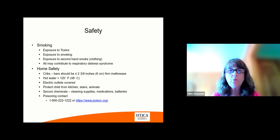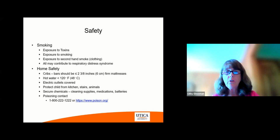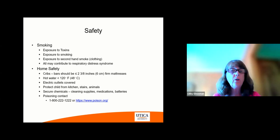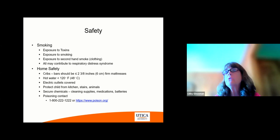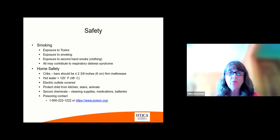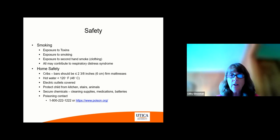Home safety areas to review with the parents: cribs — bars in a crib have to be less than 2.38 inches or 6 centimeters, and a firm mattress. Hot water shouldn't be any greater than 120 degrees Fahrenheit or 48 degrees centigrade. Electrical outlets need to be covered — that's very important, because children will find something to stick in them. Protect children from the kitchen: it has dish soap and cleaning items that are often low and need to be secured and put up high. The stairs can be an issue because children have accidents on stairs, especially infants whose heads are very top-heavy and they can fall very easily.